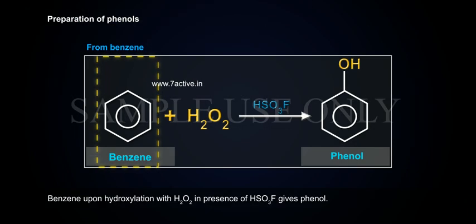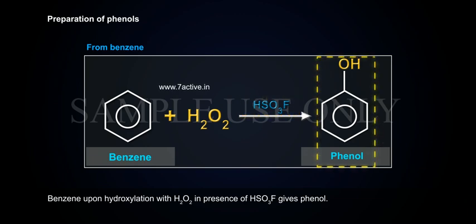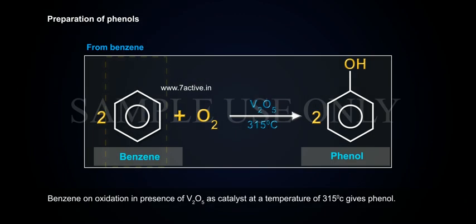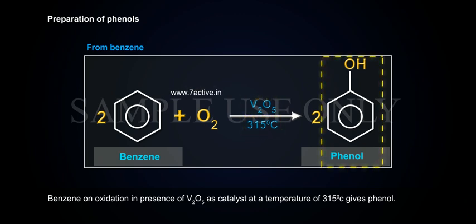From benzene: First, benzene upon hydroxylation with H2O2 in the presence of HSO3F gives phenol. Second, benzene on oxidation in the presence of V2O5 as catalyst at a temperature of 315 degrees centigrade gives phenol.